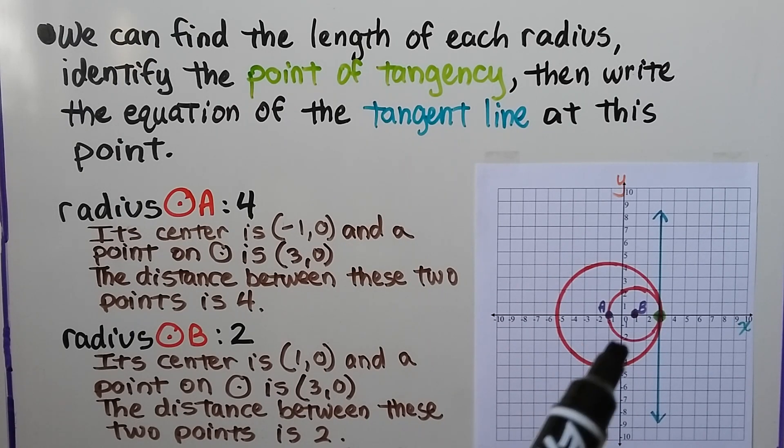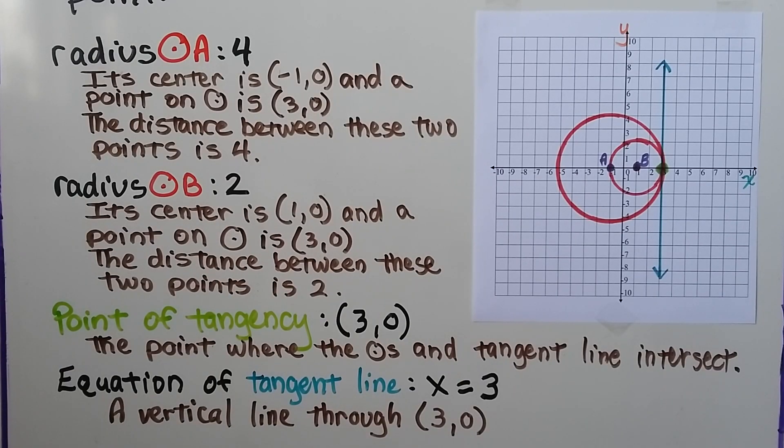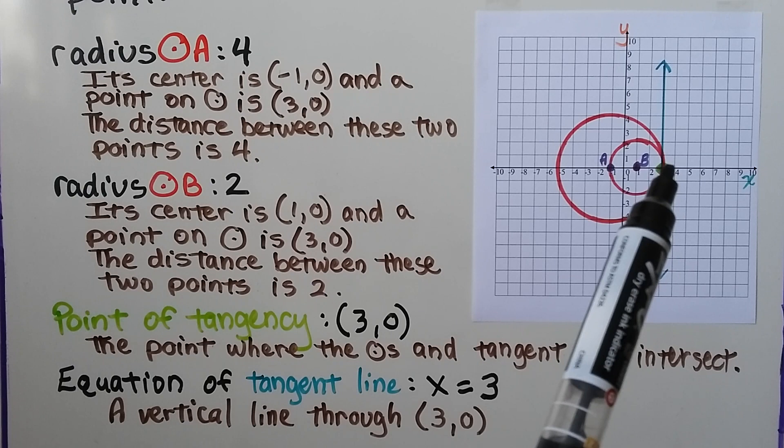For radius B, the smaller circle, it's 2. Its center is at 1, 0 right here. And a point on the circle is 3, 0. And the distance between these two points is 2. It's two units.